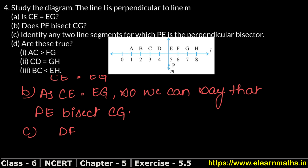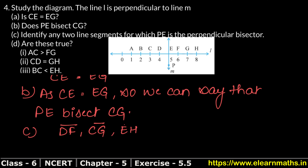The first line segment is DF — from D to F, divided equally by point E. Similarly, line segment CG — from C to G, with two equal parts on either side. And the third line segment is BH — from B to E it is 3 units, and from E to H it is also 3 units. So BH is our third line segment.